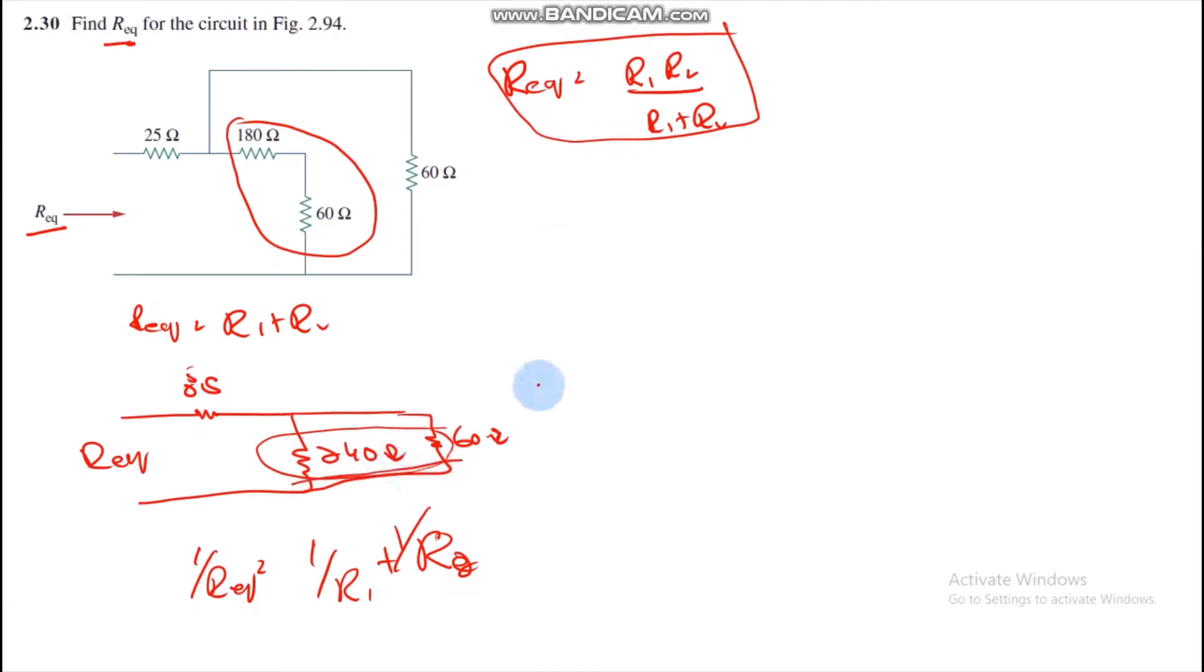R equivalent is equal to 60 and 240 multiplied and divided by 60 plus 240. Then R equivalent equals 48 ohms. Now let's look at this circuit.